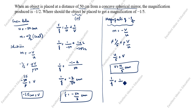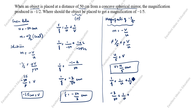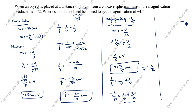Using the mirror formula again: 1 by f equals 1 by u plus 1 by v. The f value we already calculated is minus 3 by 50. So minus 3 by 50 equals 1 by u plus 1 by v. Since v equals u by 5, then 1 by v equals 5 by u. So minus 3 by 50 equals 1 by u plus 5 by u. Taking u as common: 6 by u equals minus 3 by 50.